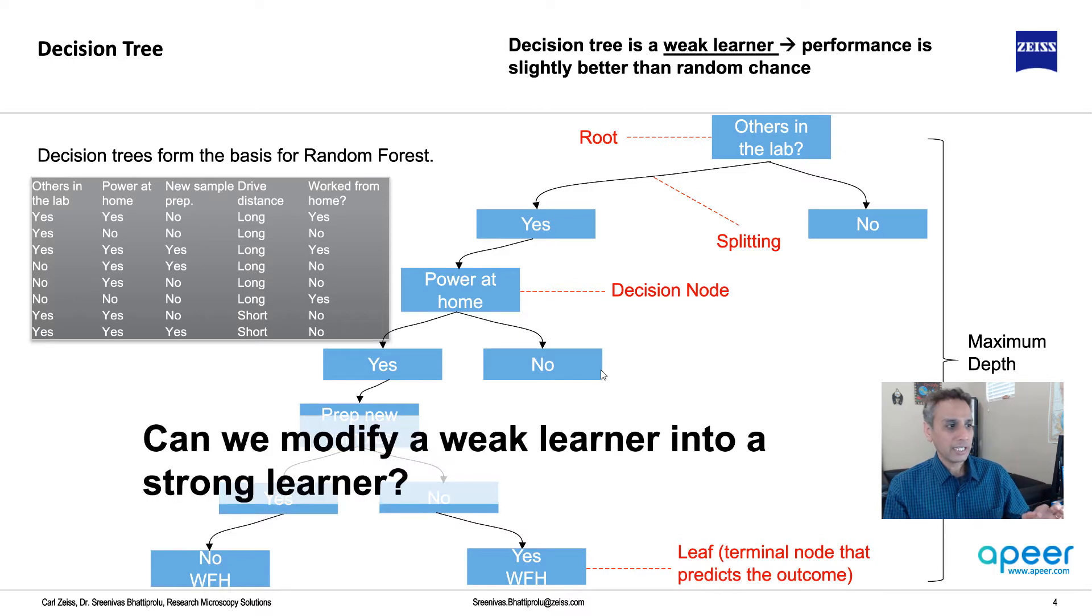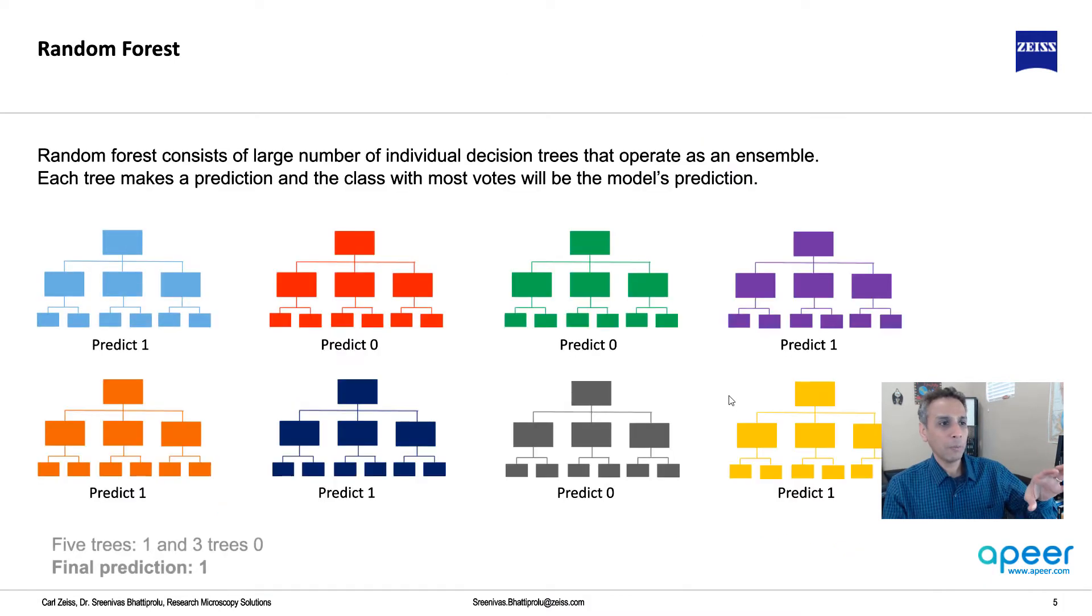Can we modify a weak learner into a strong learner? Random forest is an example where we put a whole bunch of trees together. This is called ensembling. Tree number one gives some prediction, tree number two gives something else. You put all the trees together to create a forest, and the randomization comes from splitting the data and selecting features at each node. This is majority voting - democracy. This makes the weak learner a strong learner.